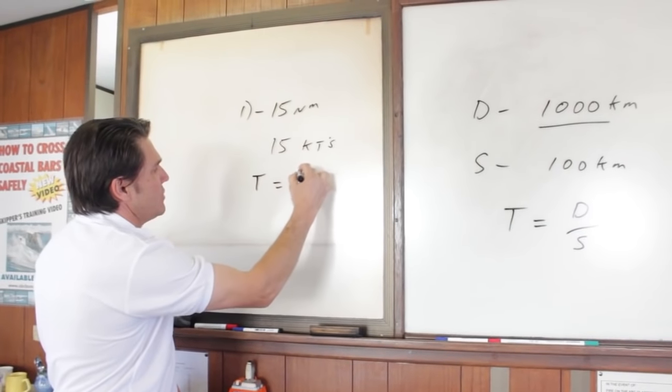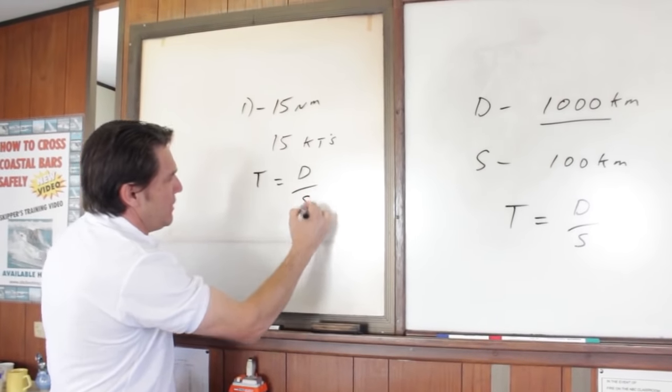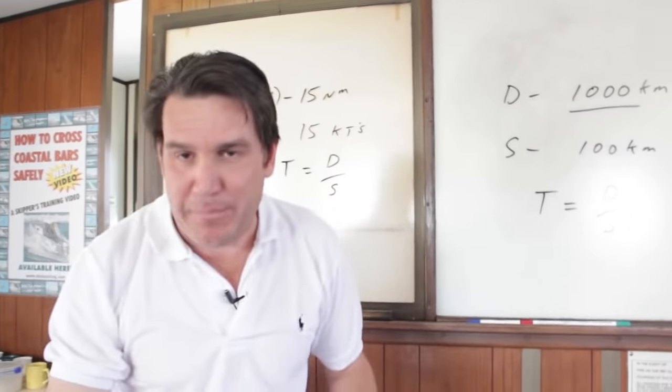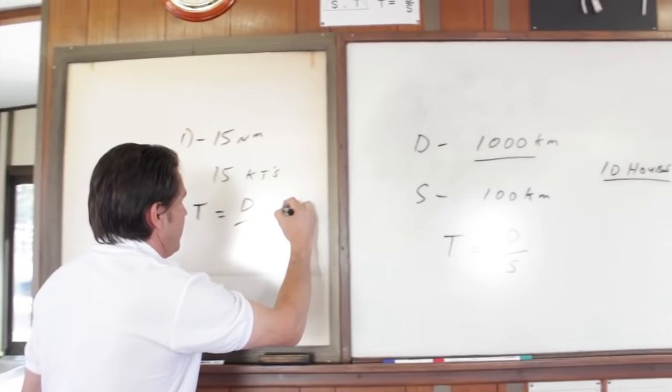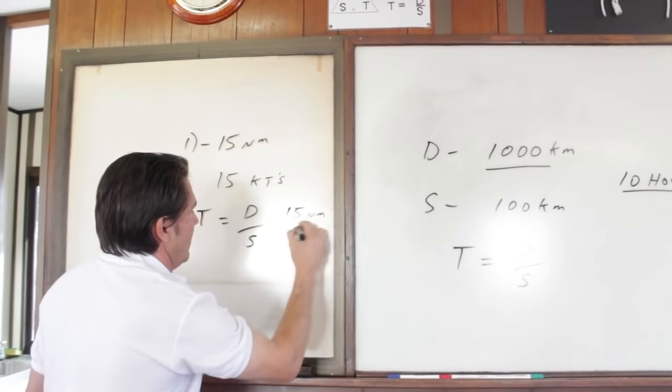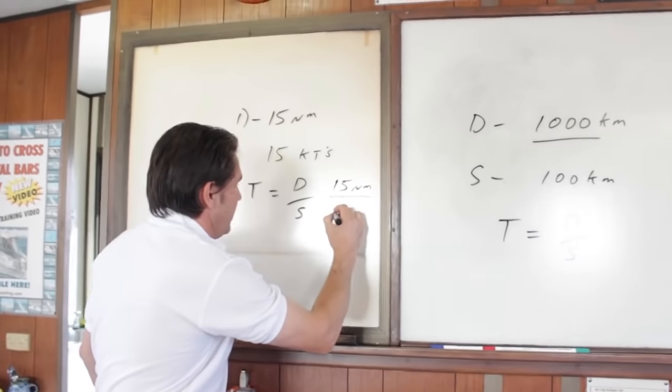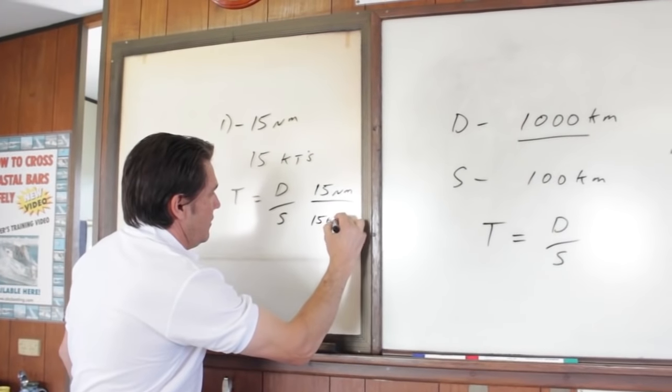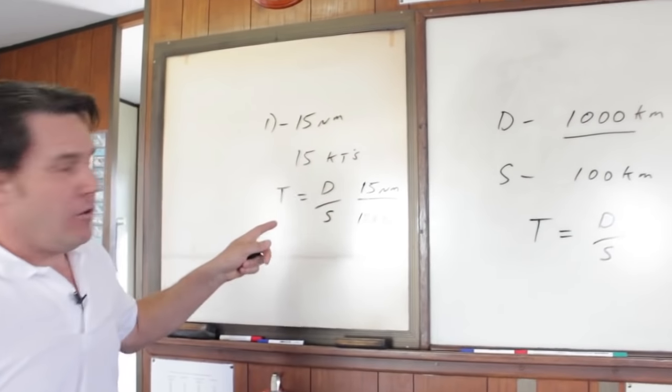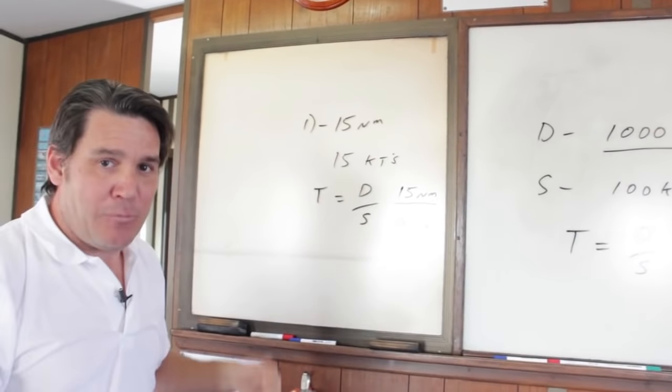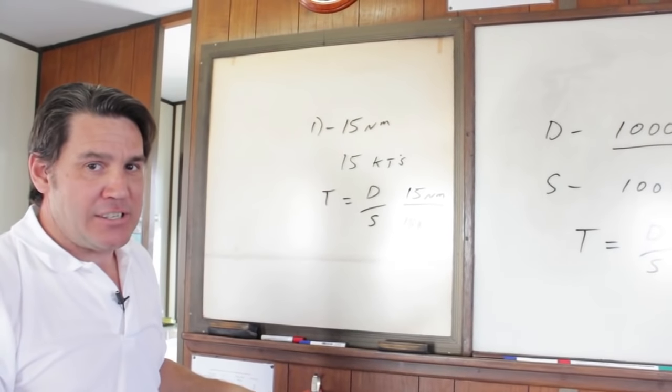Time equals distance divided by speed. So on our chart, we measured 15 nautical miles. We had a boat speed of 15 knots. Therefore, the duration of this trip would take one hour, and once again I'm trying to keep the figures nice and simple.